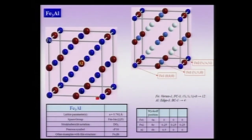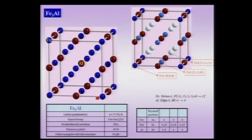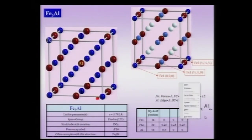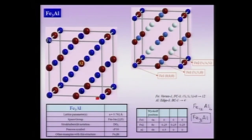Now let me count the aluminum atoms. The aluminum atoms are shown in brown and are located at the 12 edges. From 12 edges with one-fourth contribution each, that gives 3 aluminum atoms from the edges. There is one more aluminum atom located at the body center, giving a contribution of 1. Therefore, total of 4 aluminum atoms in this unit cell. I can write the chemical formula of this unit cell as Fe12Al4, which reduces to Fe3Al as the reduced chemical formula.